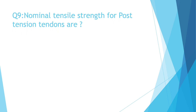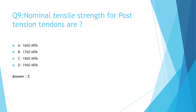Question Number 9: The nominal tensile strength for post-tension tendons is: A. 1660 MPa, B. 1760 MPa, C. 1860 MPa, D. 1960 MPa. The correct answer is C. 1860 MPa.